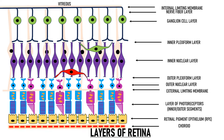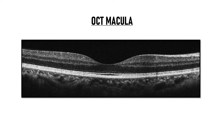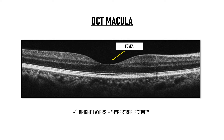So with this basic understanding, let's see this picture of OCT macula. We know this OCT scan is taken through the macula because this depression here corresponds to the fovea, which is the center of the macula. As you can see, there are many bright layers and many dull-looking layers. These bright layers imply hyper-reflectivity and these dull layers imply hypo-reflectivity, so there are many hyper-reflective and hypo-reflective layers in the retina.